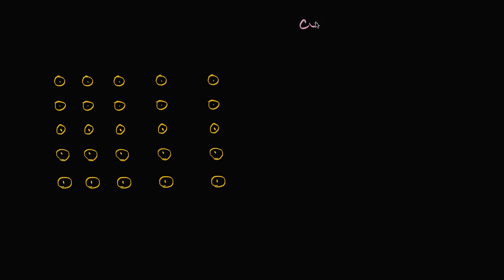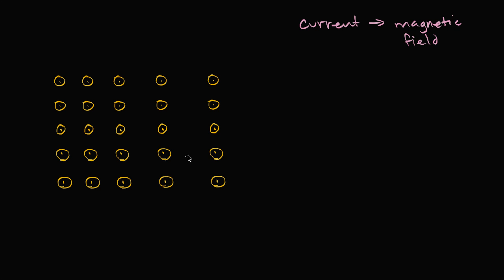In other videos, we talk about how a current flowing through a wire can induce a magnetic field. What we're going to talk about in this video is how we can go the other way — how a change in a magnetic field can affect or induce a current in a loop of wire.